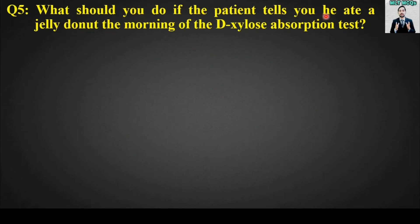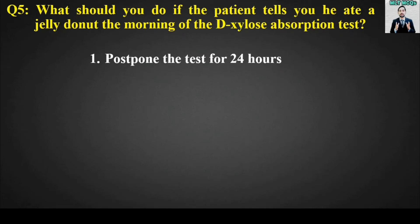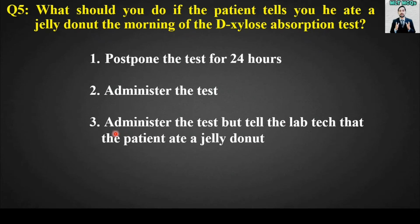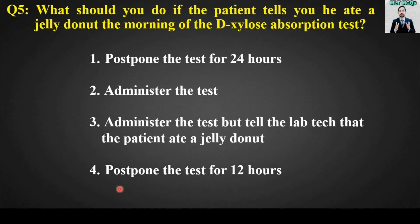MCQ number five: What should you do if the patient tells you he ate a jelly donut the morning of the D-xylose absorption test? Options are: postpone the test for 24 hours, administer the test, administer the test but tell the lab technician that the patient ate a jelly donut, or postpone the test for 12 hours. The right answer is option number one — postpone the test for 24 hours.